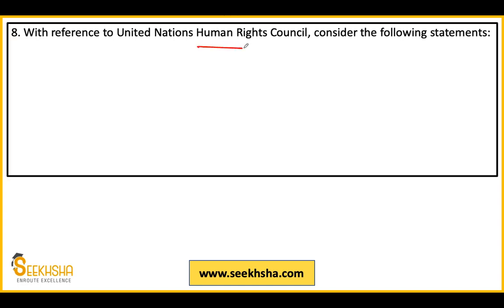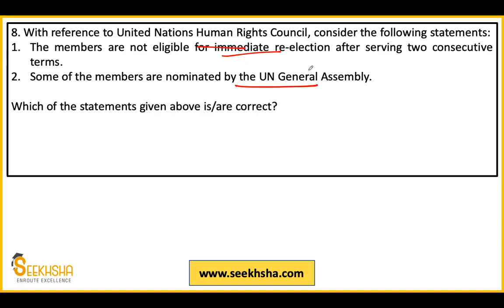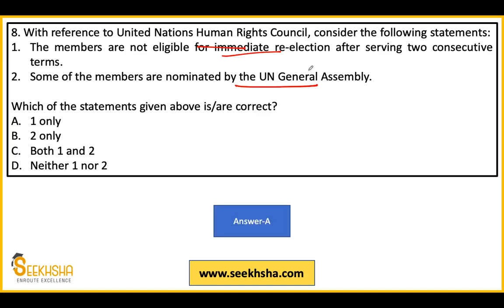Eighth question: Statements about the UN Human Rights Council. Statement 1 says members are not eligible for immediate re-election after serving two consecutive terms. Statement 2 says some members of UNHRC are nominated by the UN General Assembly. Which is/are correct? The answer is option A — only statement 1 is correct. It was in news because Donald Trump withdrew the US from the UNHRC, and the new President announced rejoining.